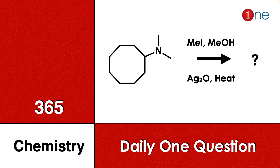Welcome to One Chemistry, this is the 365 Chemistry Series — daily one question for you. Here, cyclooctane is given with dimethylamine inside the chain. The reagents are methylation with methanol, then silver oxide and heating. You have to find what will be the final product.